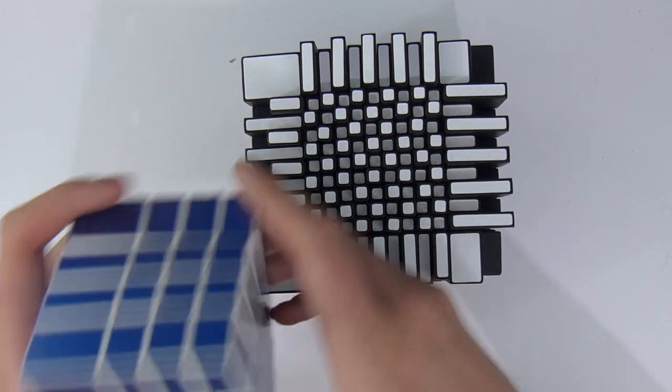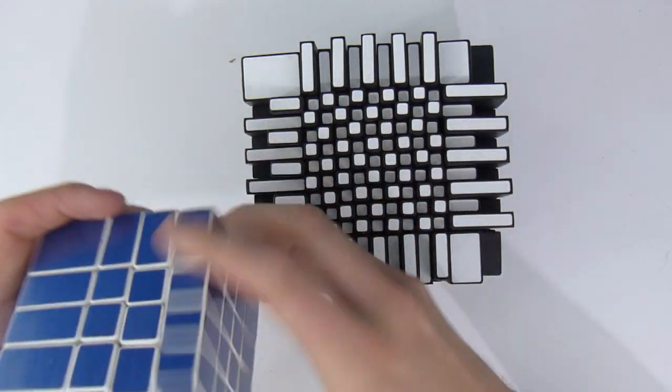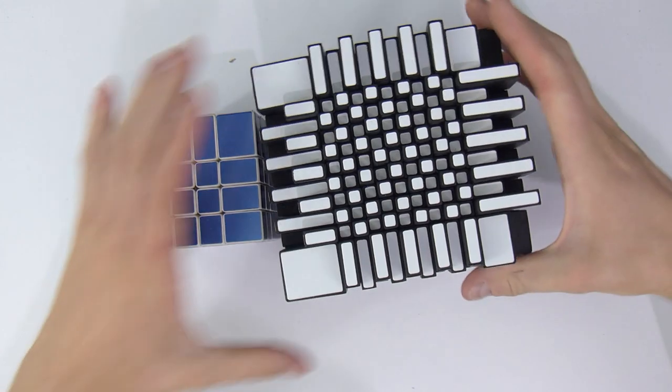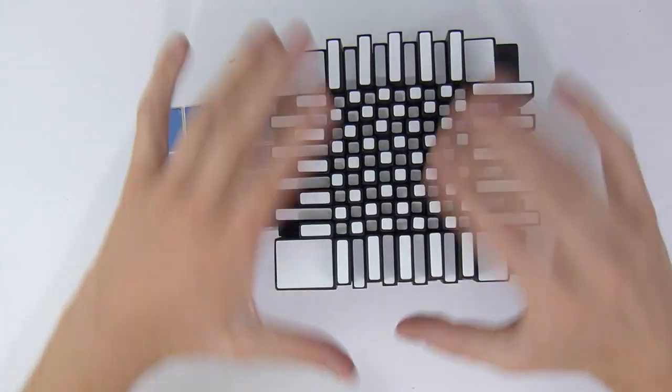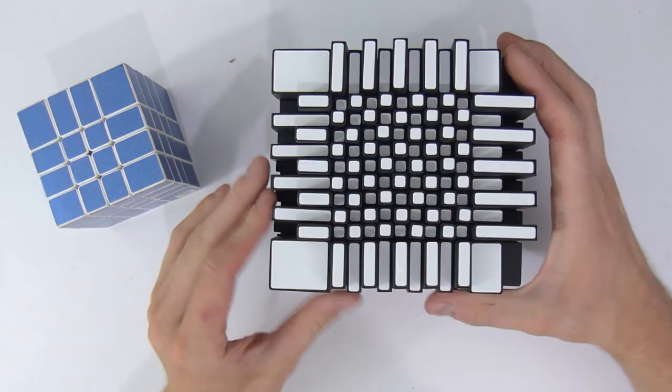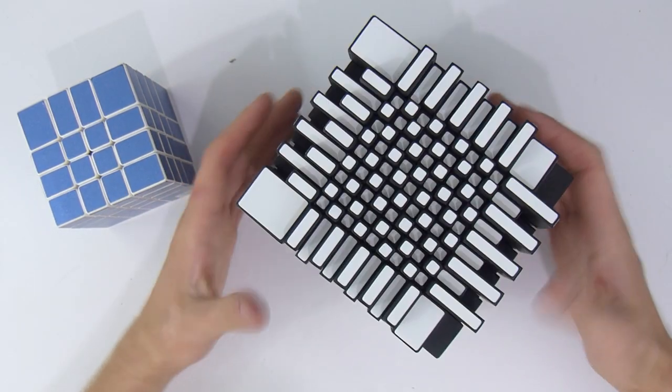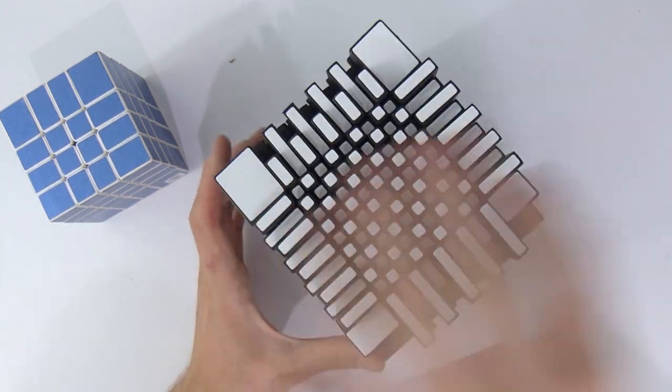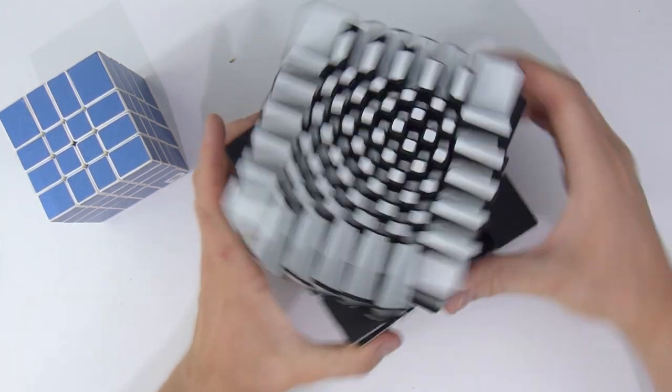Alright, so this is the 4x4 right next to the bump 11x11. So this is so small compared to this, this puzzle is insane. Seriously, it's insane. I'm in awe just by watching this right in front of me. And I'm like, how would one even solve this without going crazy? This is amazing.